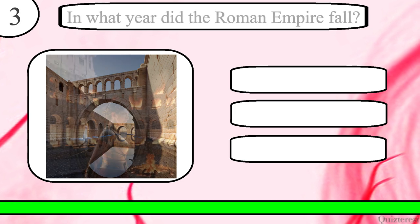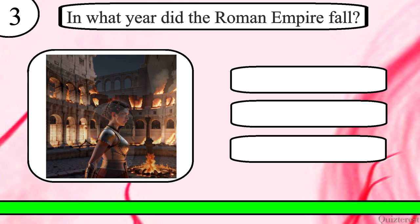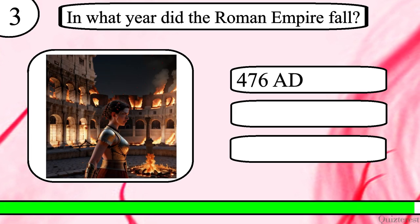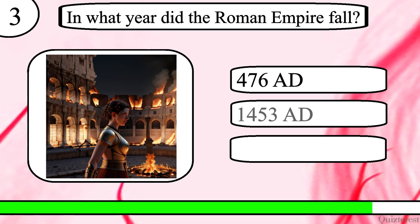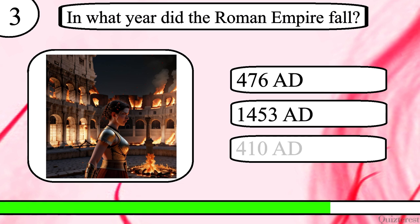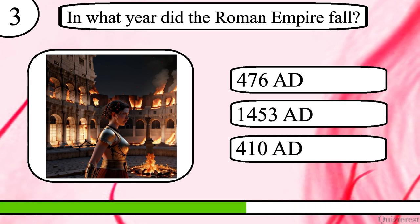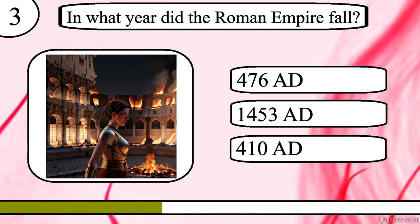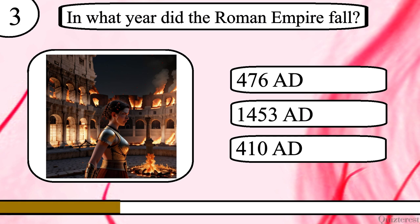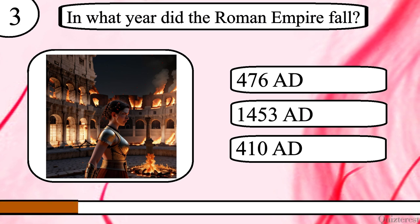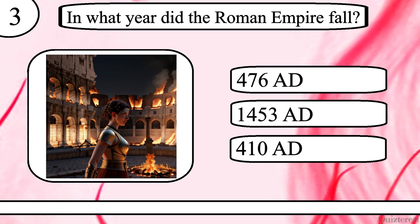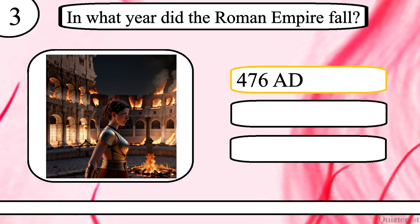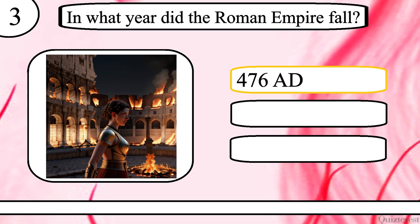Question 3. In what year did the Roman Empire fall? 476 AD, 1453 AD or 410 AD? The correct answer is 476 AD.